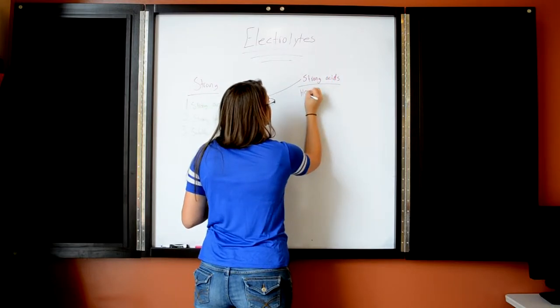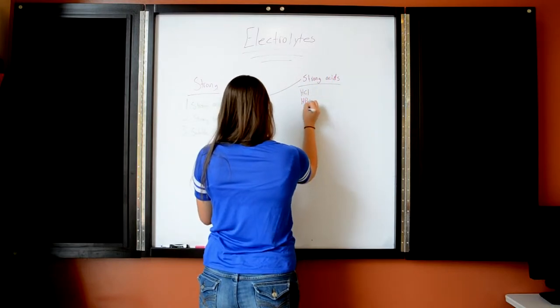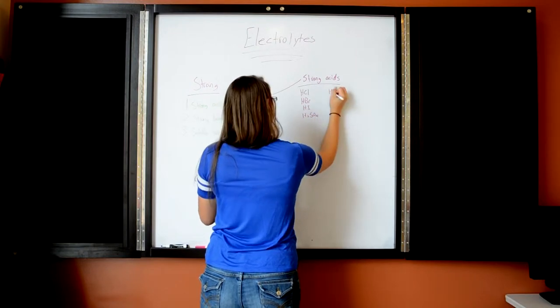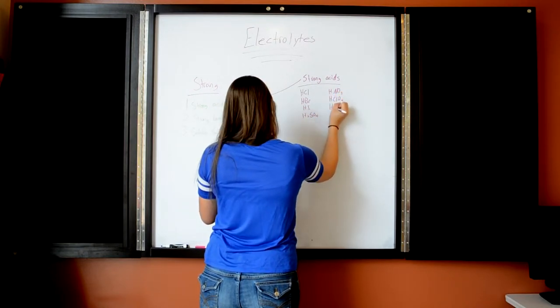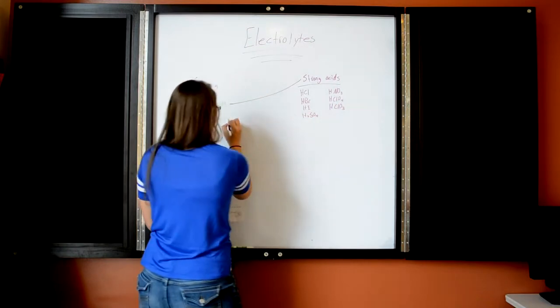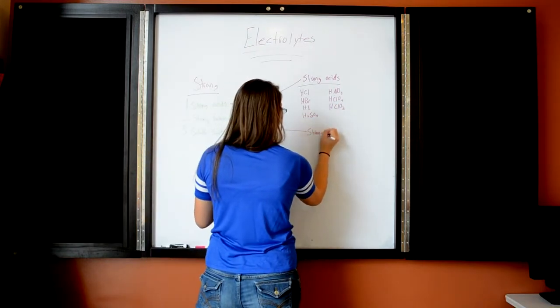The seven strong acids you have to know are HCl, HBr, HI, H2SO4, HNO3, HClO4, and HClO3.